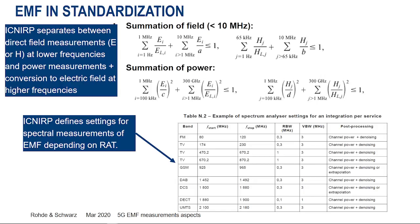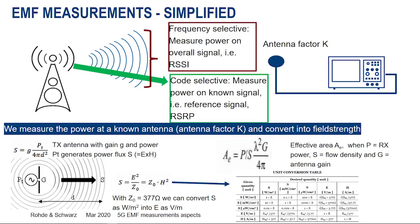Simplified: what we measure is not the field directly — we measure power. We have an antenna with a known characteristic, so we know the antenna factor K. We measure the received power, and this power is then converted, using the formulas, into the electric field strength.